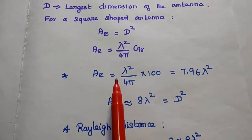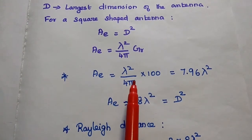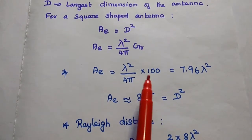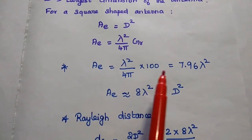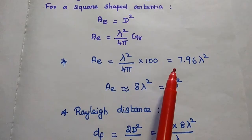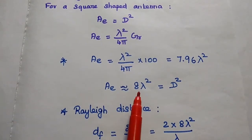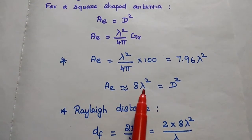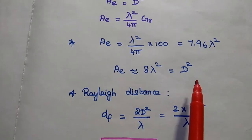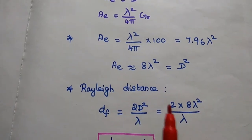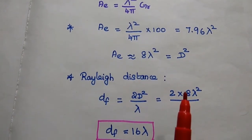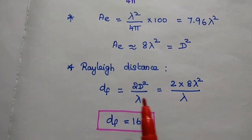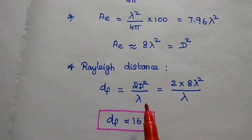For a square-shaped antenna, the effective area AE = D². We find the effective area using the gain formula: AE = λ² / (4π) × receiving antenna gain = λ² / (4π) × 100 = 7.96 λ², which we approximate as 8λ². Since AE = D², we have D² = 8λ².